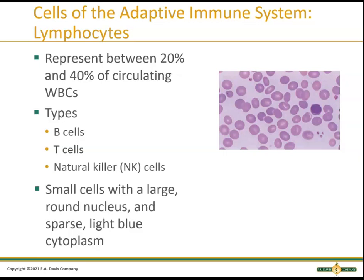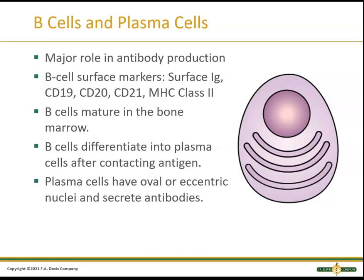The cells of the adaptive immune response are primarily lymphocytes, which make up roughly 20 to 40 percent of all white cells in peripheral blood. There are B cells, T cells, natural killer cells, and K cells. Looking at a lymphocyte, it's a small cell with a scanty amount of cytoplasm that stains light blue, with a round, condensed nucleus.